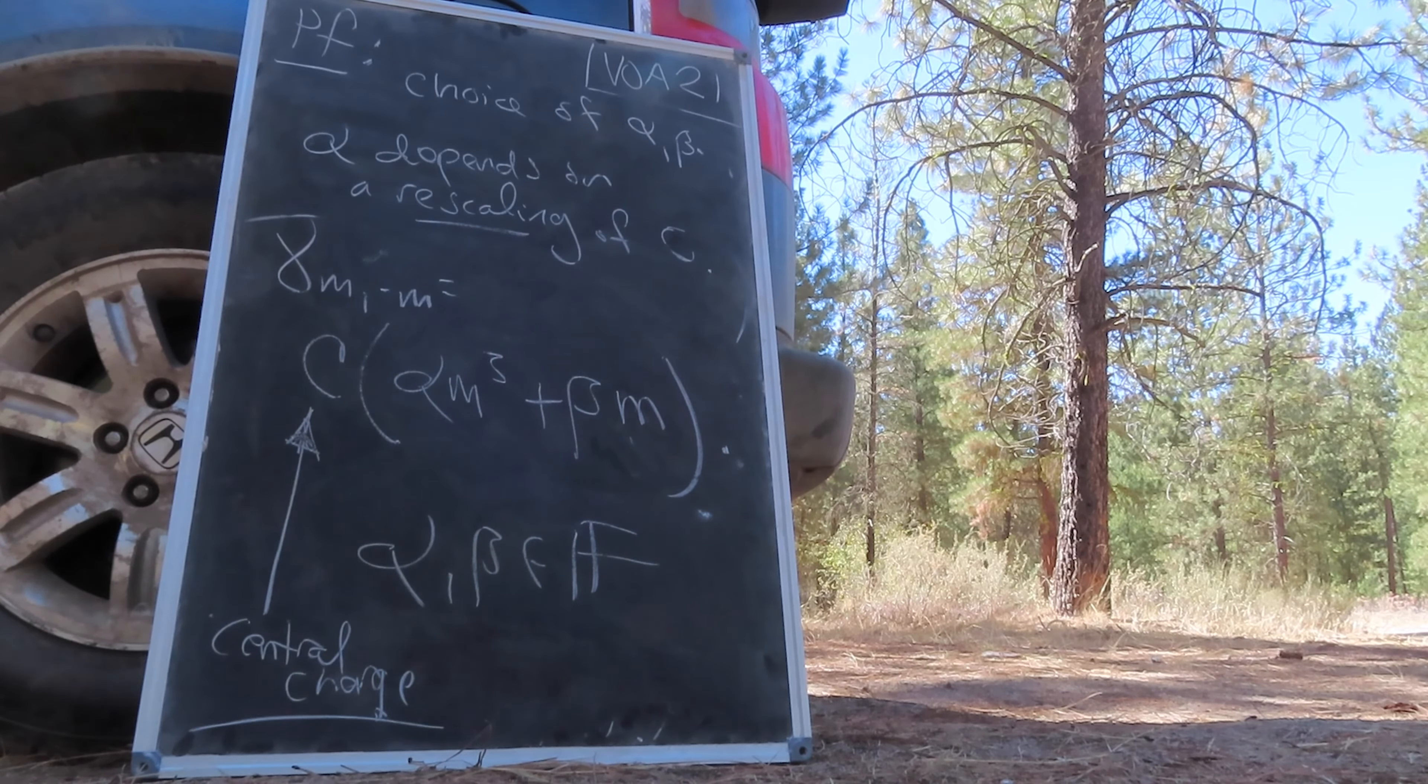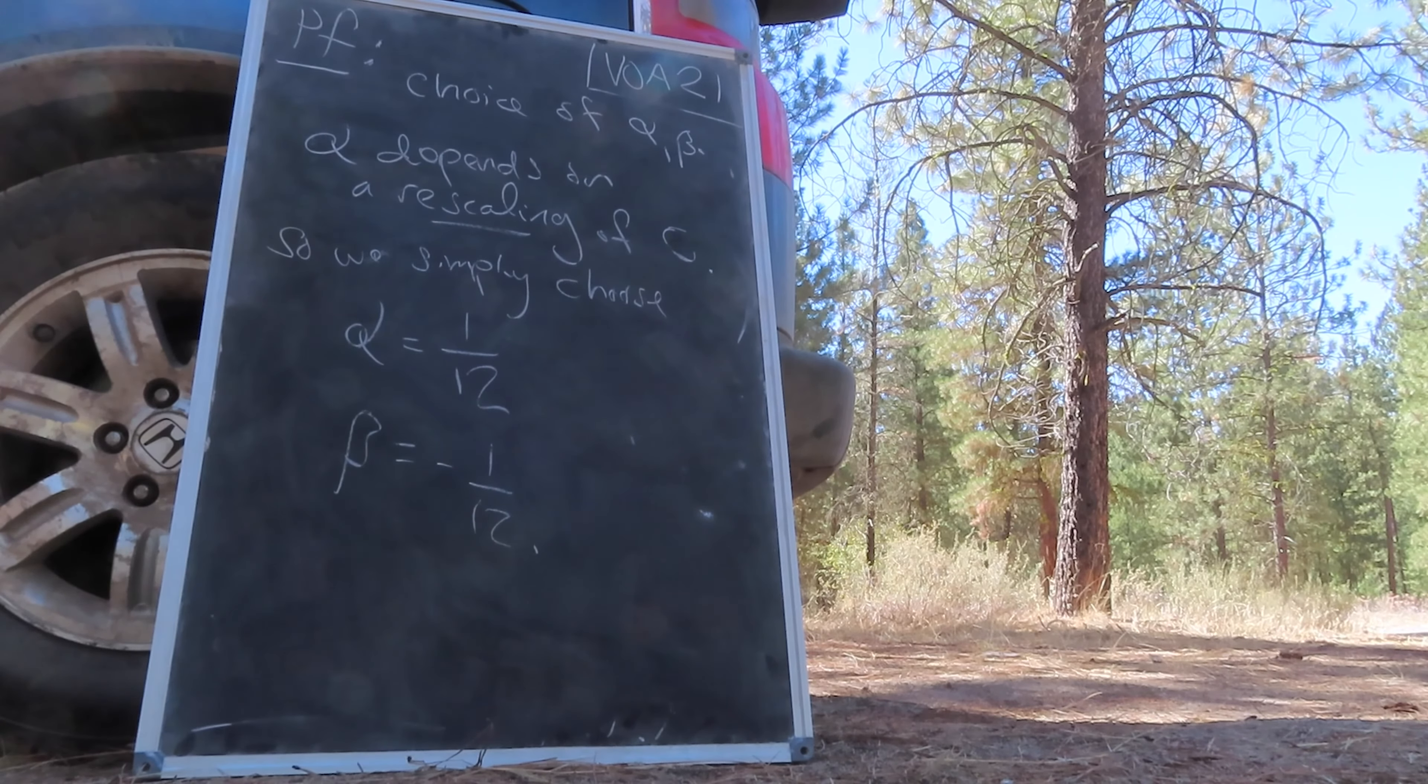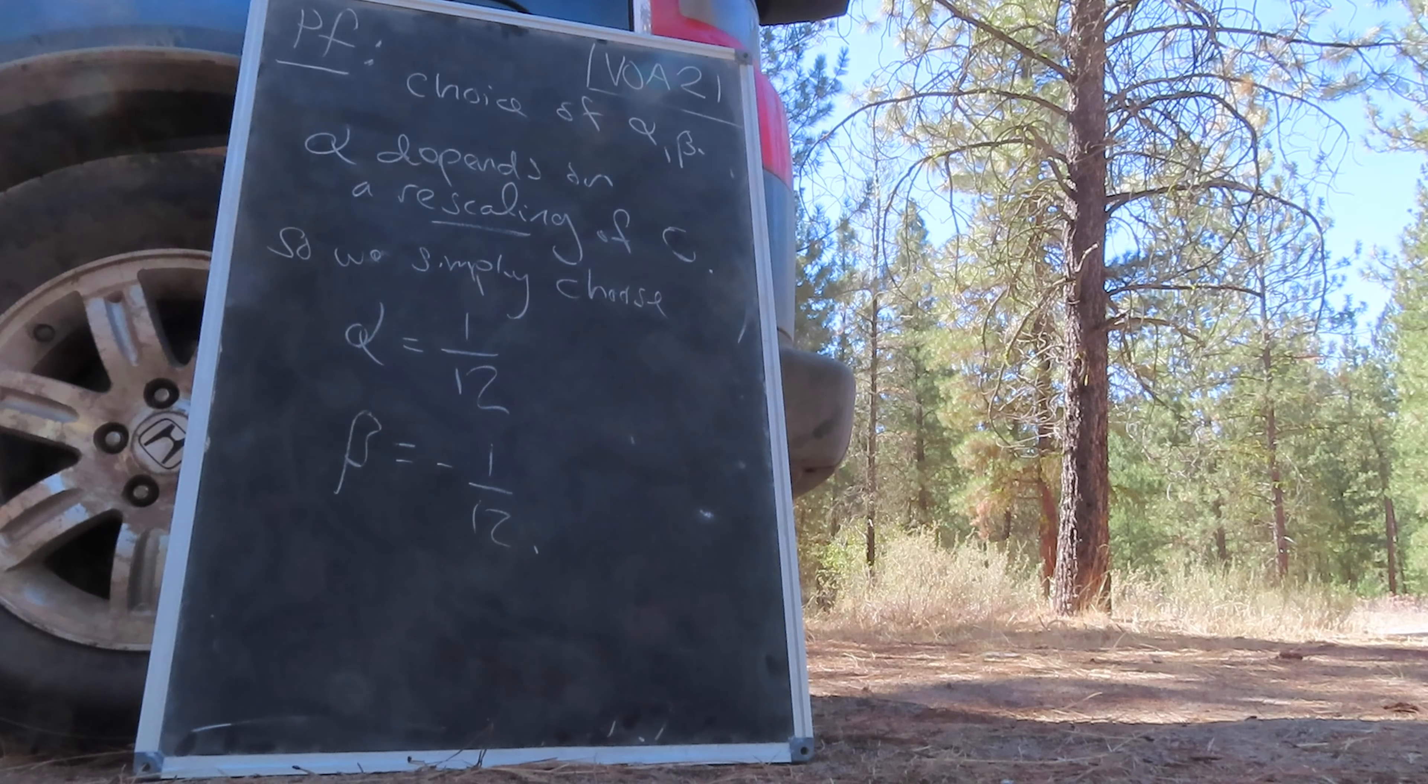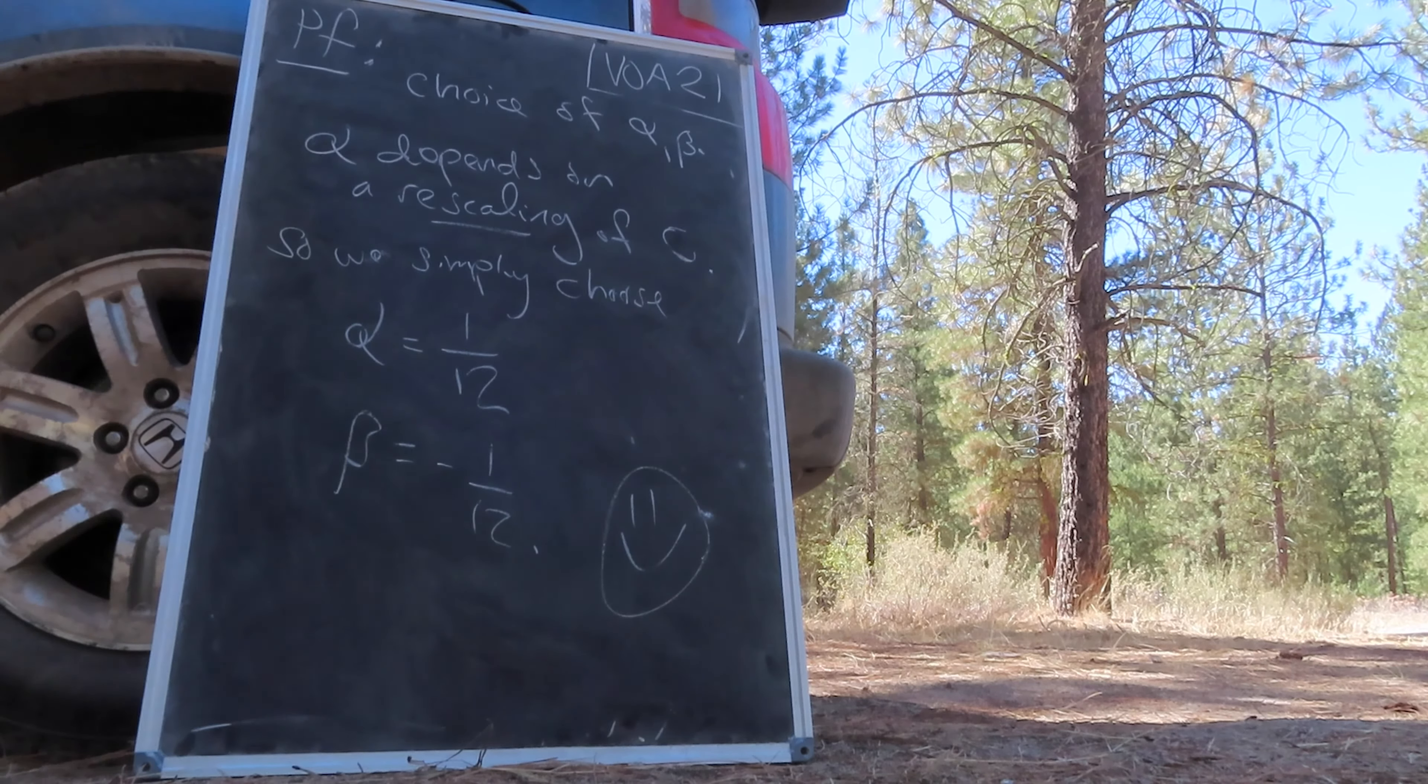Alpha itself is only defined up to its product with c. Thus, we can actually select a pair alpha and beta by convention, as any other choice will represent the same central extension of w. And we're done.